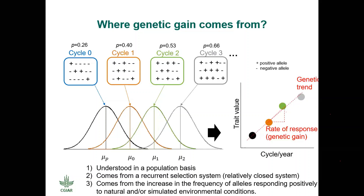Genetic gain occurs for a trait or an index of traits and is normally expressed in percentage or in the normal units of the trait. As John was mentioning, it could be one trait or it could be many traits — that's really the decision you need to come up with your stakeholders. Three things I would like to emphasize: genetic gain is only understood on a population basis. There is no genetic gain for a single individual. This is a population genetics concept, which is why you normally see all those images in distributions.